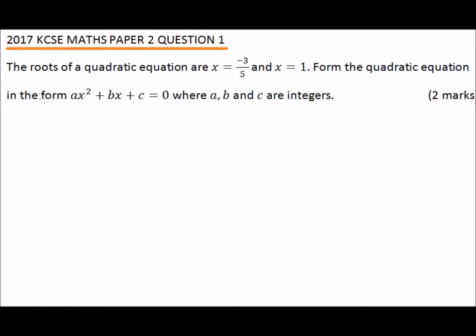Form the quadratic equation in the form ax squared plus bx plus c equals 0, where a, b, and c are integers.